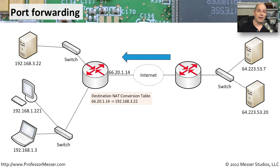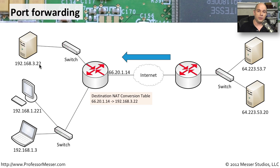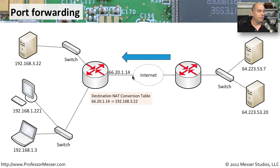Here's a good example of how this works. You may have devices on the internet that want to access a server at internal address 192.168.3.22. So you configure a port forward inside your router that says: if anybody accesses 66.20.1.14 on port 80, forward them to 192.168.3.22 on port 80. Now your port forward is in place, and anyone needing that web server simply accesses the external IP address.